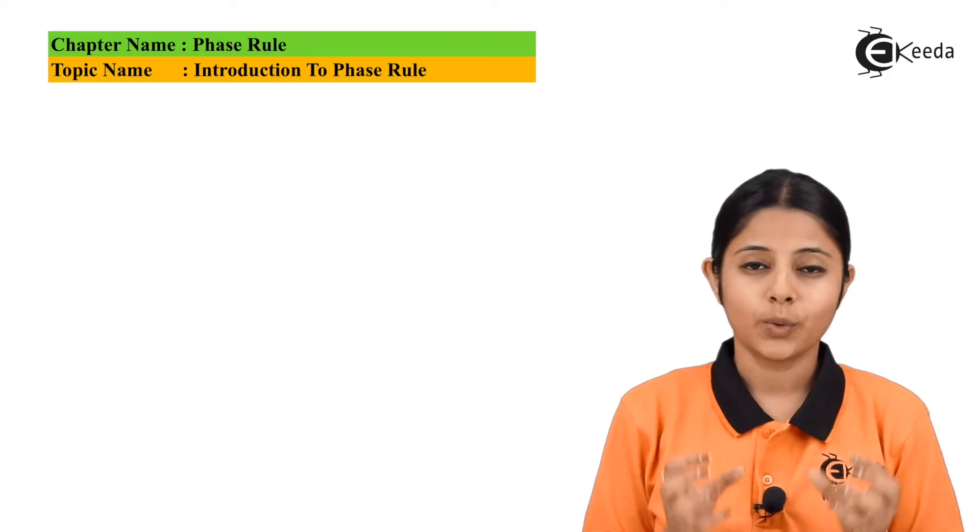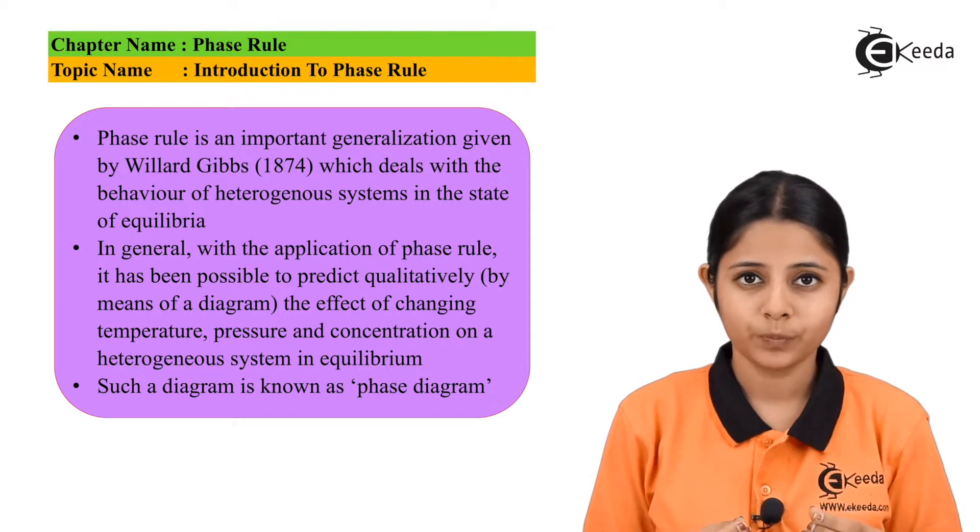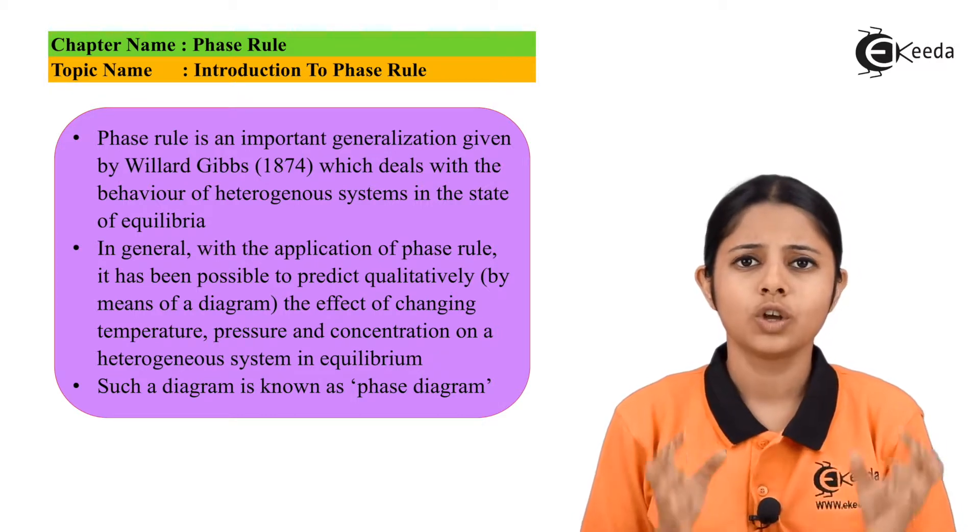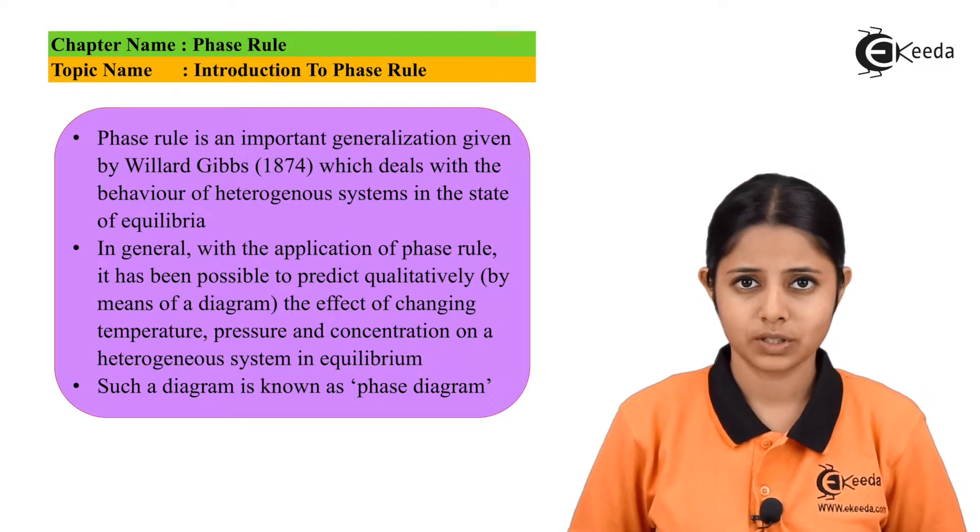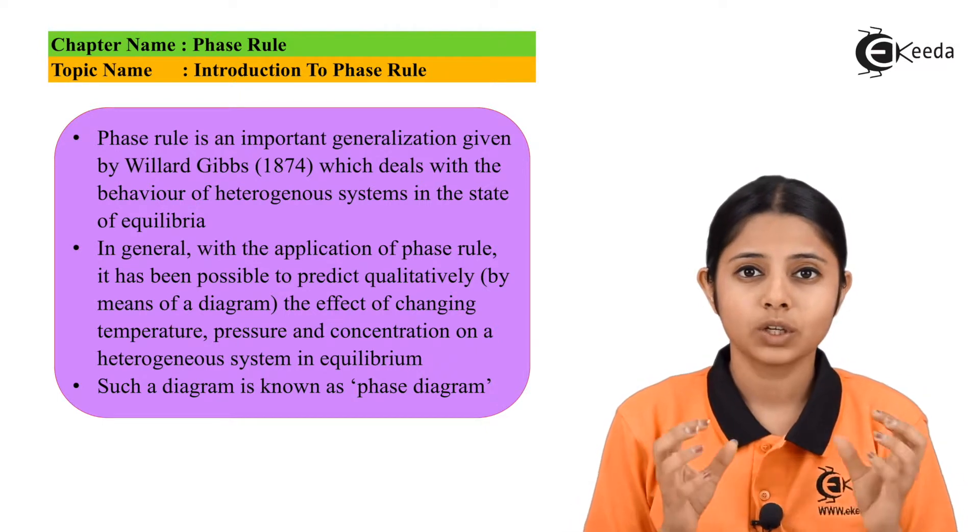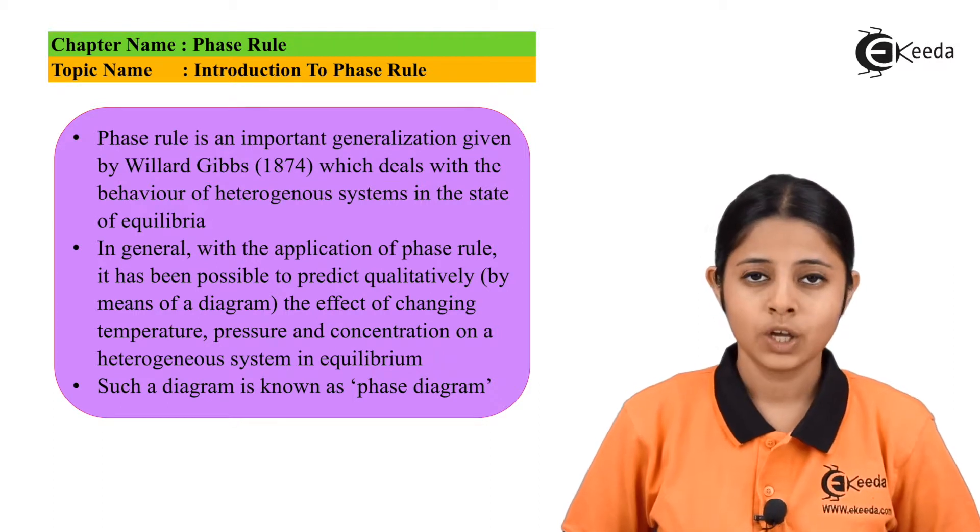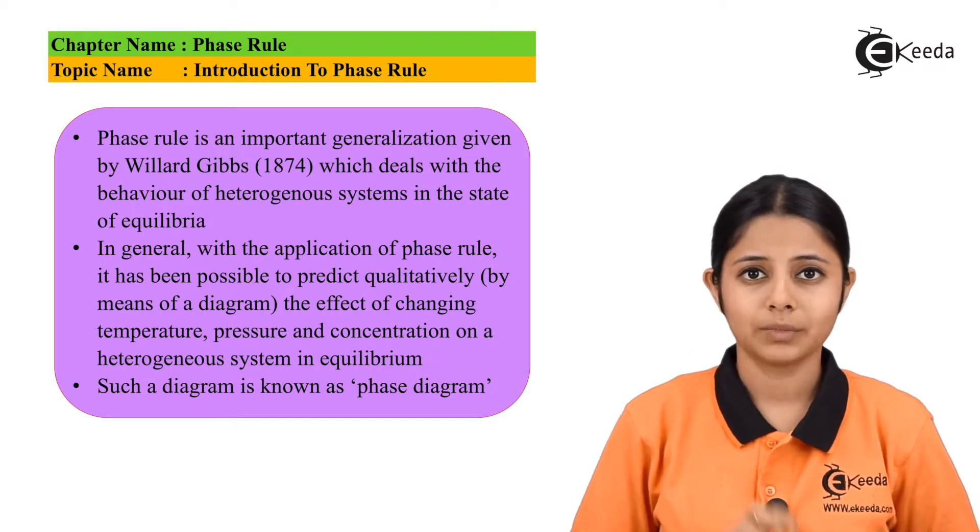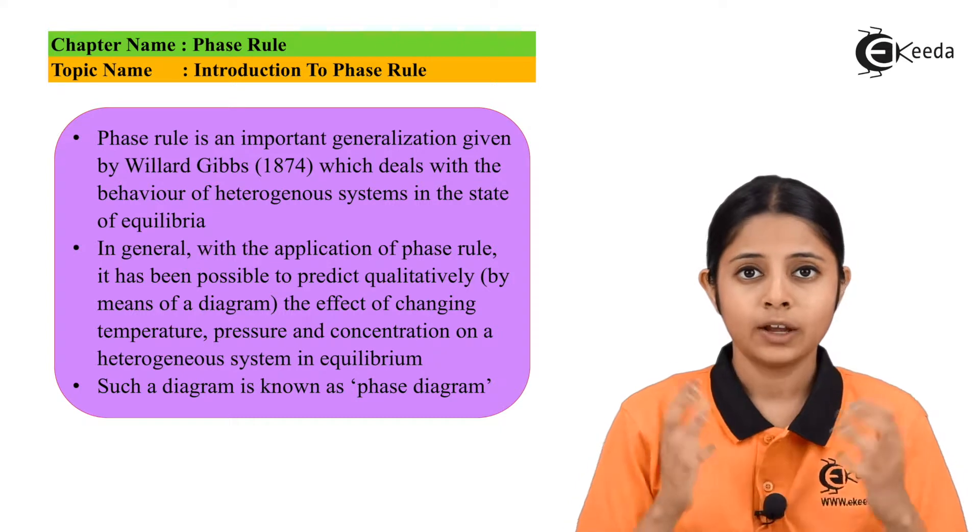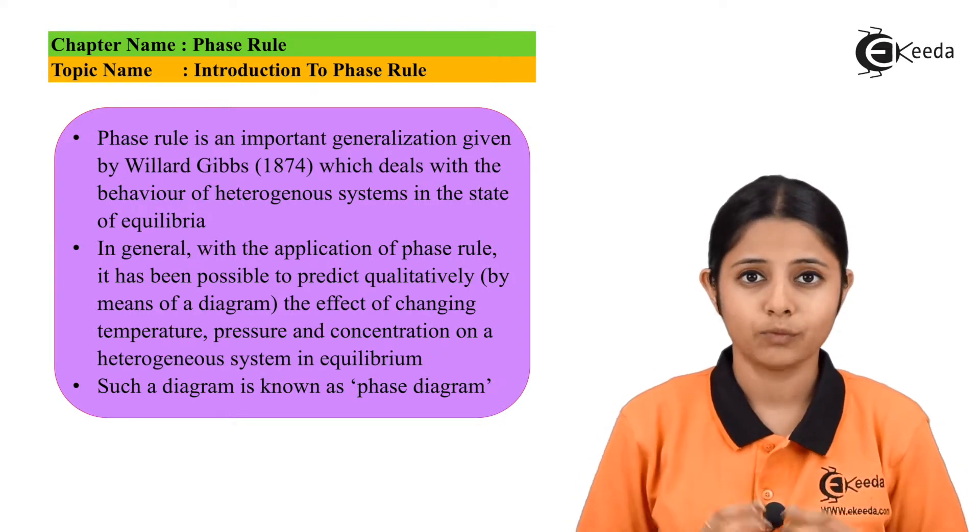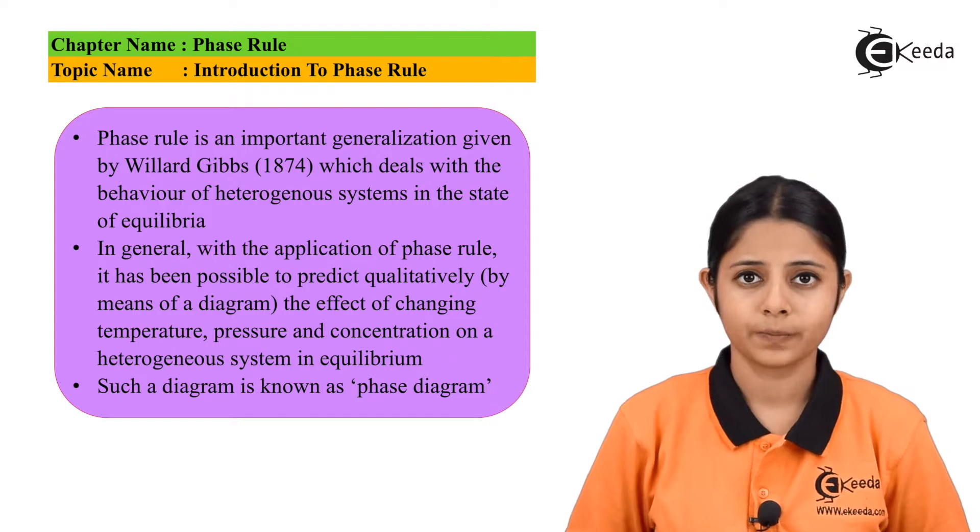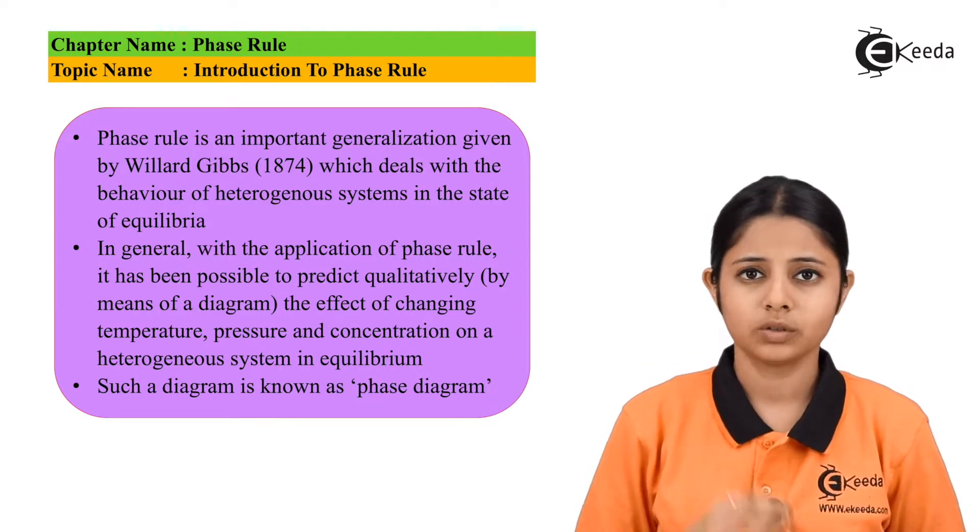Phase rule - what exactly is phase rule? Phase rule is a rule given to us by Willard Gibbs. This rule is a generalization of different heterogeneous systems. Heterogeneous systems are those systems in which there are more than one components present. It can be a two component system, three component system, and all these components are not in the same phase - they are in different phases. For example, oil and water are in different phases.